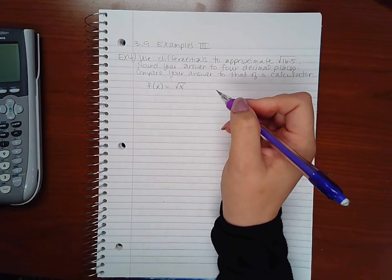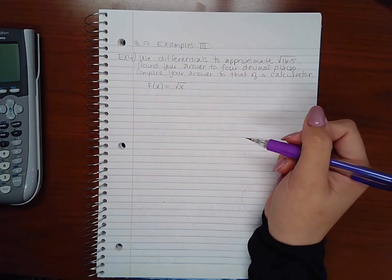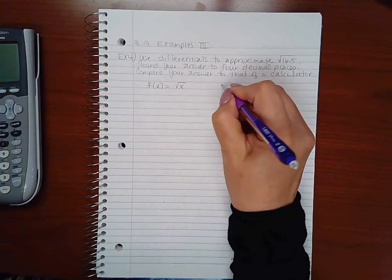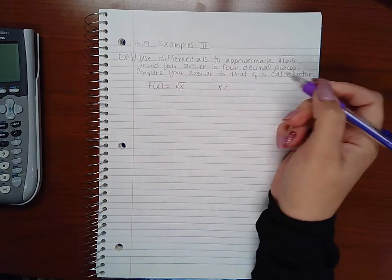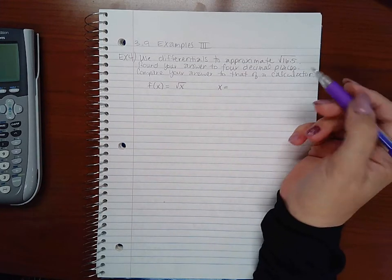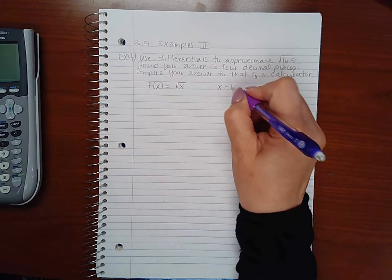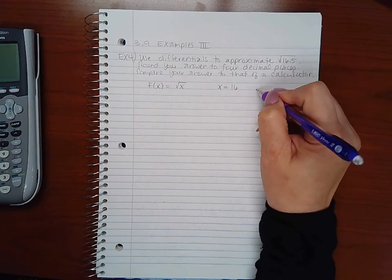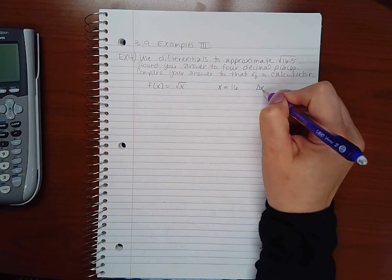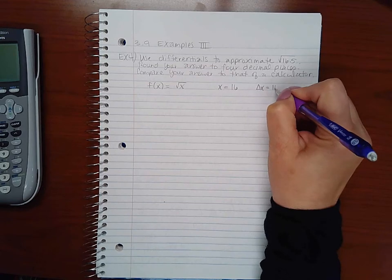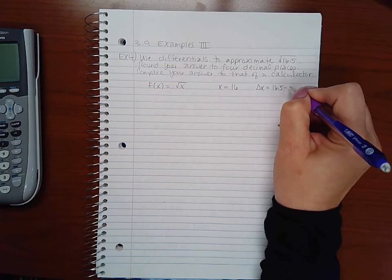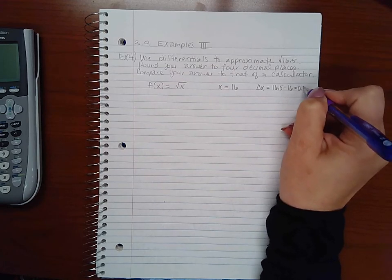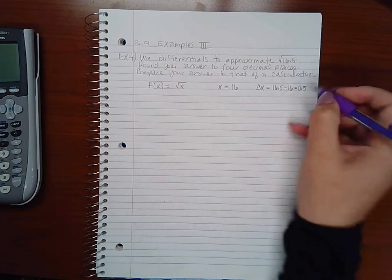Now I need to come up with an x value and a differential. Let's pick a perfect square close to this number—a perfect square close to that number would be 16. And then dx or delta x would be that original number minus my number that I picked, which would be 0.5. Now this number can be represented by delta x or dx—they're the same.